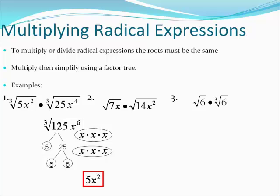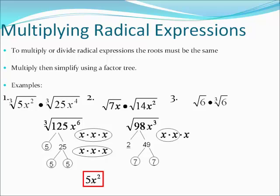On number two, multiply what we see: seven times fourteen is ninety-eight, and x times x² is x³. Break down 98 in a factor tree: two times forty-nine, and forty-nine breaks down into seven times seven. This is a square root so it takes two of the same number to make a group. The sevens make a group — they'll come out. Two is left over and will stay inside. With the x's, you have one complete group and one left over. So out in front is your seven and your x; left inside is your two and your other x.